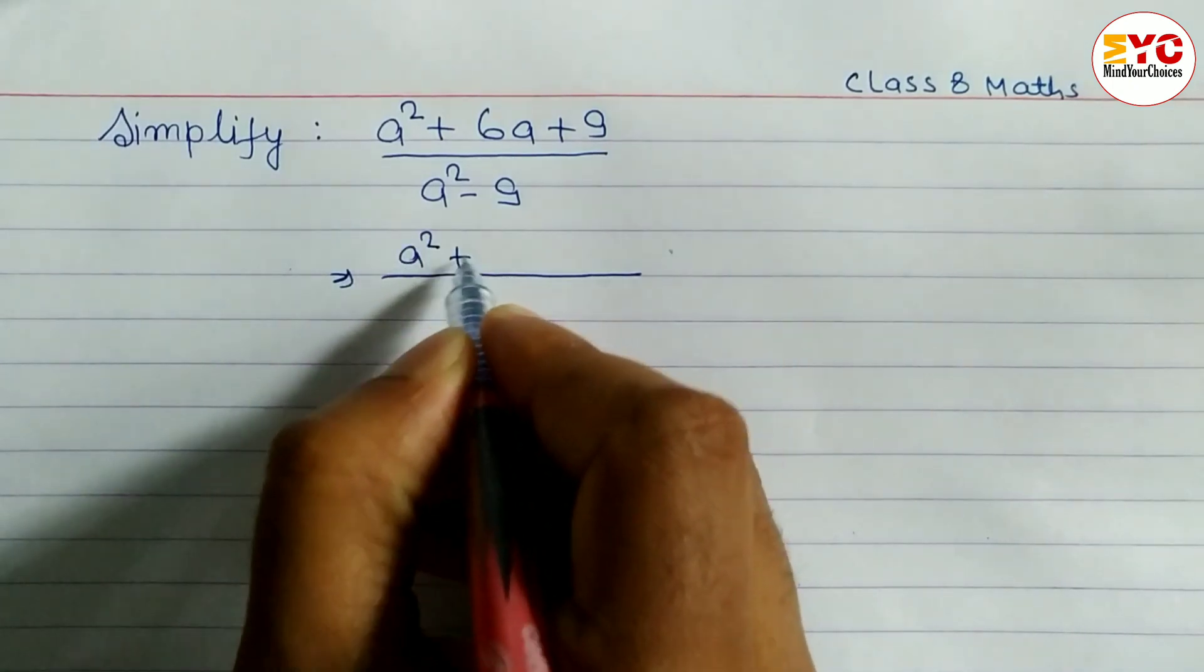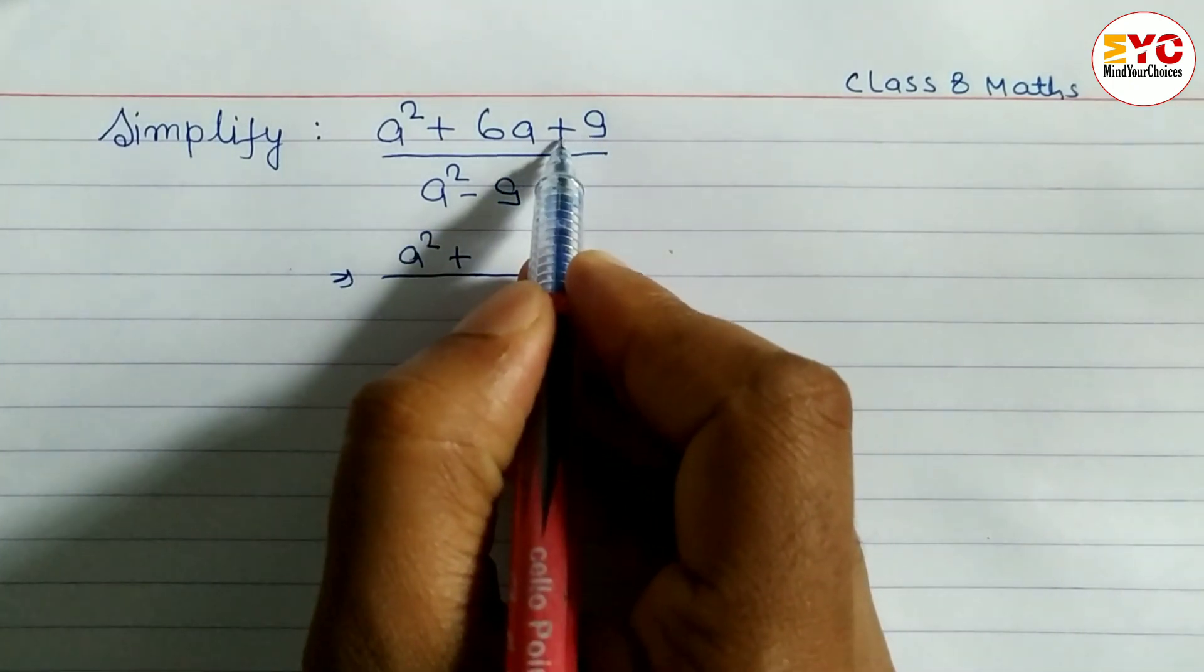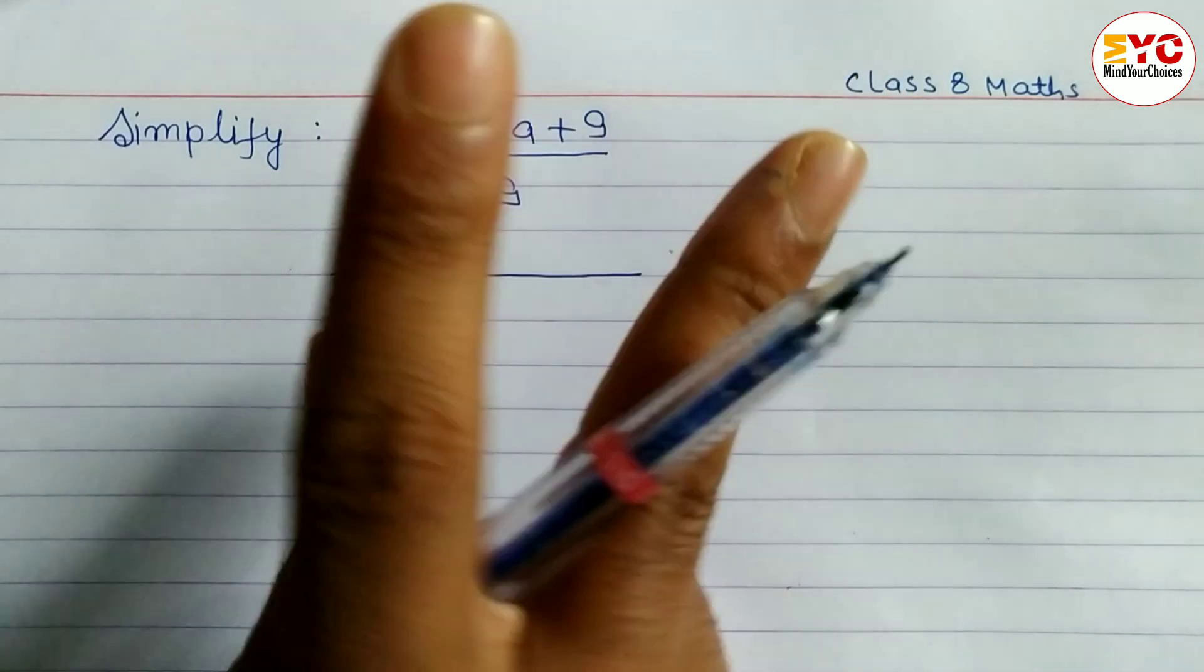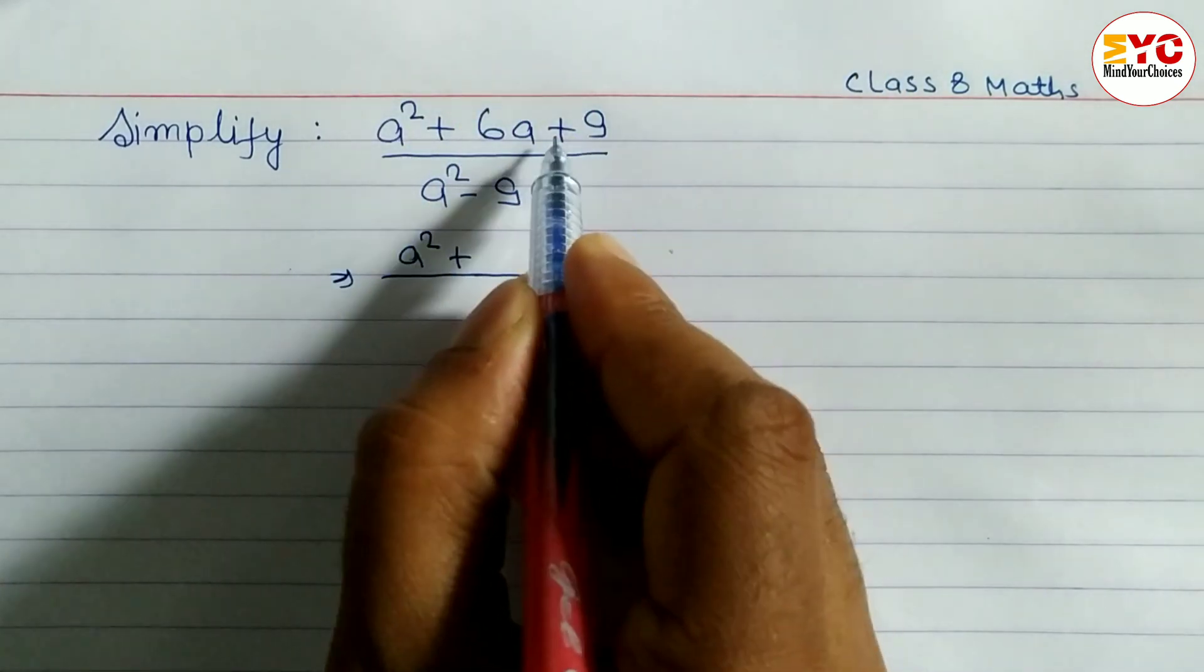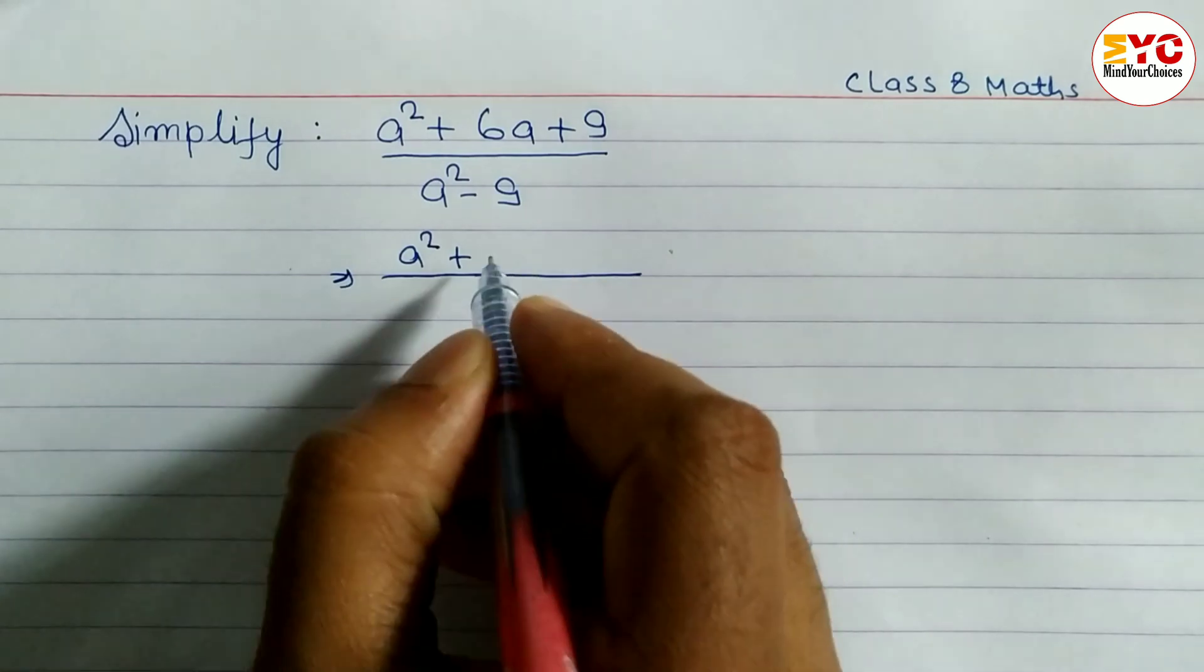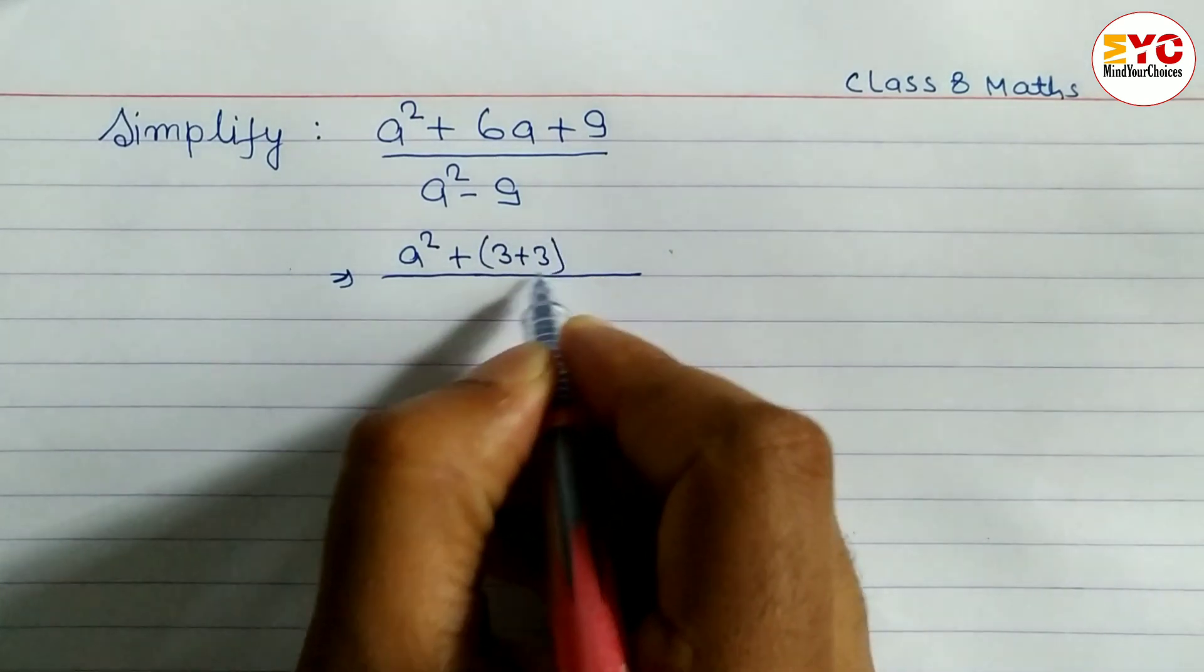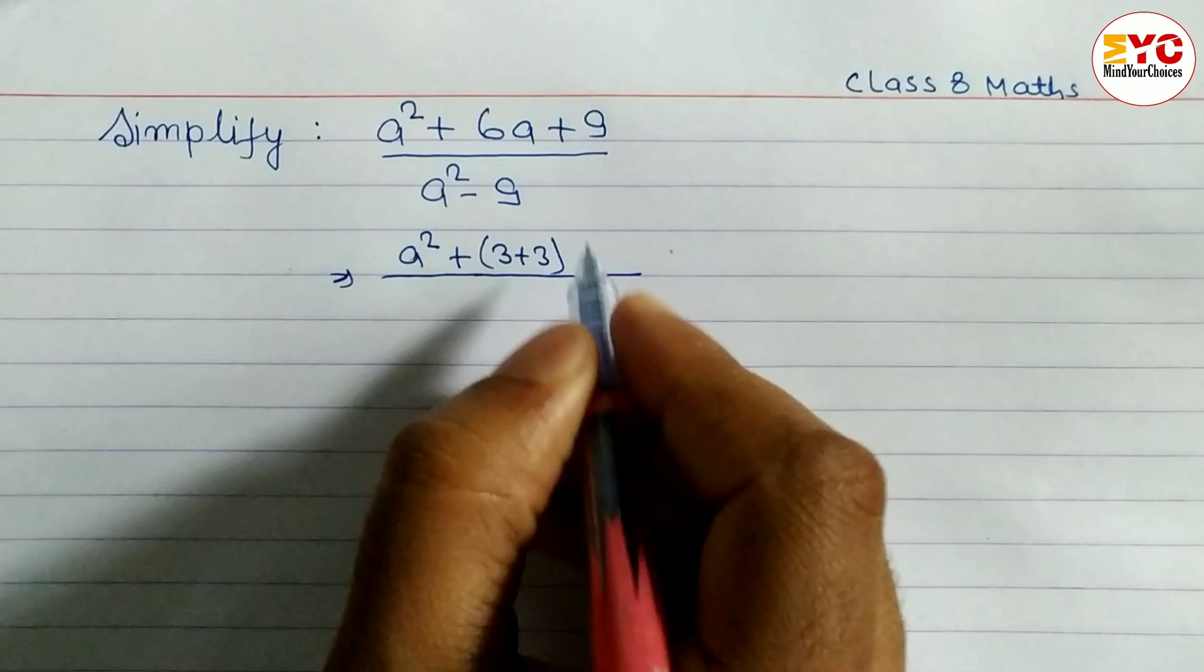You can see here a square plus, while multiplying 9 and while adding 6, we have to find out two factors whose multiplication is 9 and addition is 6. We know that 3 plus 3 is 6, and when you multiply 3 into 3 we will get 9.